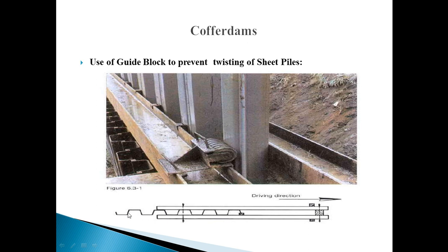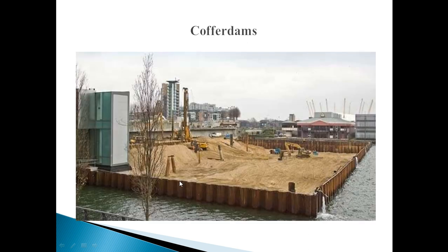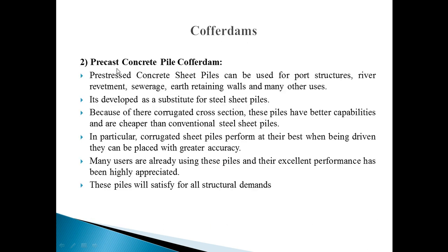These are the sheet piles, and these two are the guide blocks. This figure indicates the sheet pile, and these are the guide blocks. The driving direction is shown — the sheet pile is driven in a directly vertical direction. The guide block is used to prevent twisting of the sheet pile. In this second example, the sheet pile is partially connected with the bank, where it can retain the water at the sides.